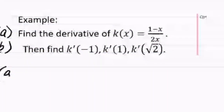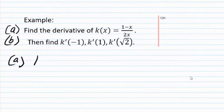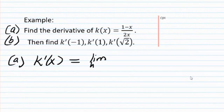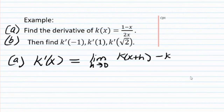So for part a, we are saying find k prime of x, the derivative, which is the limit as h goes to 0 of k of x plus h minus k of x divided by h.